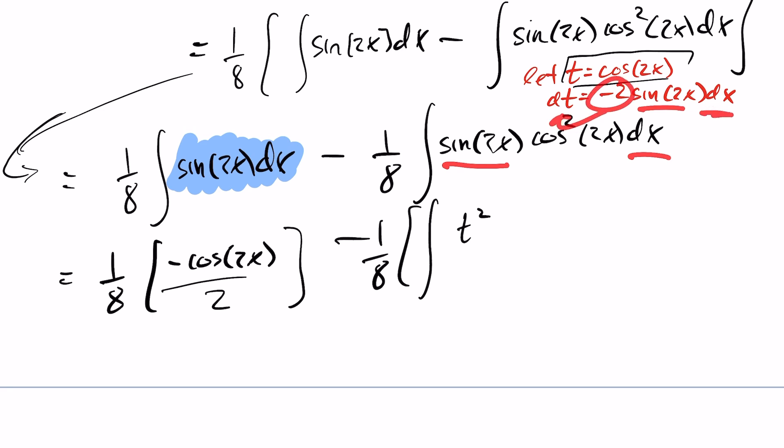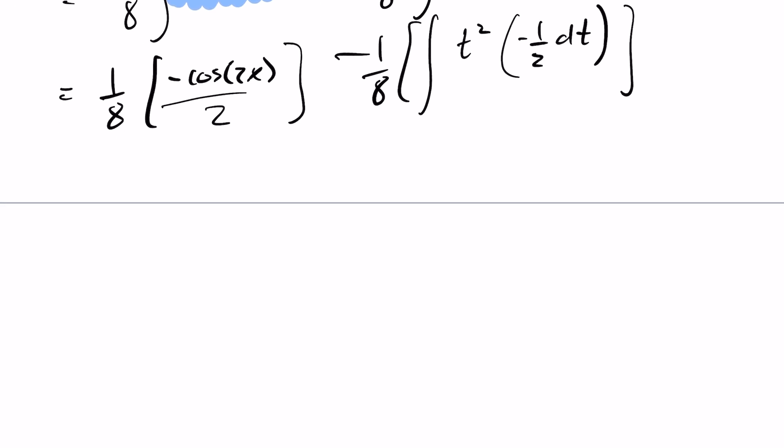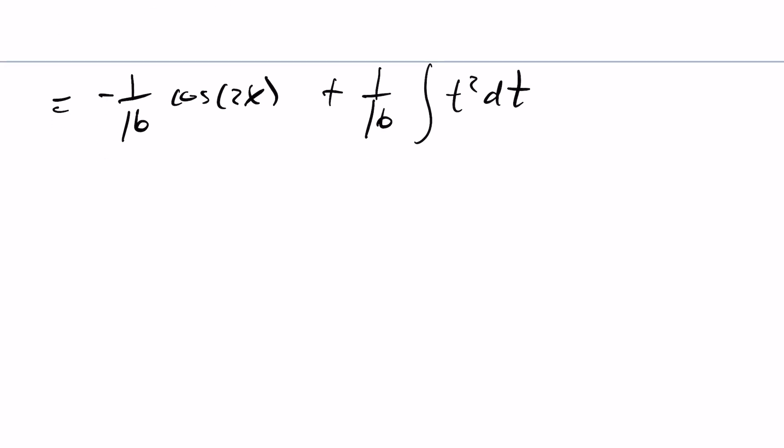I have a minus 1 over 16. So I get minus 1 over 16 the cos of 2x minus plus I should say when I put these two together here get plus 1 over 16 the integral of t squared dt. And that is easy for us to take the integration of.